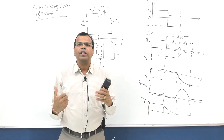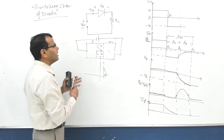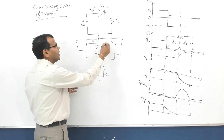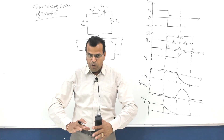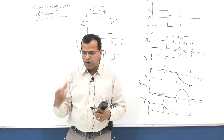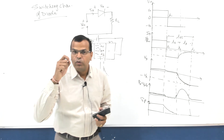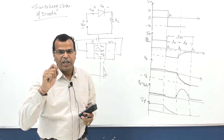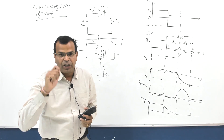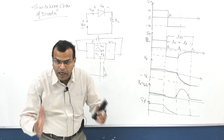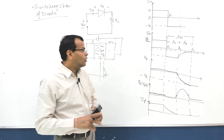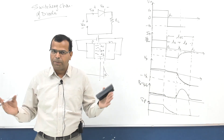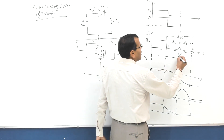When the depletion layer expands, more and more bound charges appear in the depletion layer. Bound charges appearing in the depletion layer means you are charging the junction capacitance - the space charge capacitance. When you charge a capacitance, the current through the capacitance decreases. So as the junction capacitance charges, the current starts decreasing.